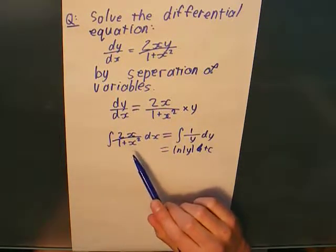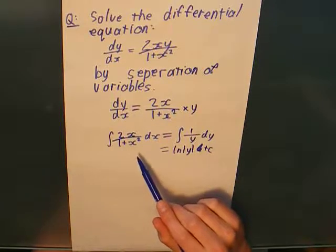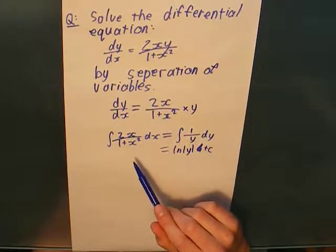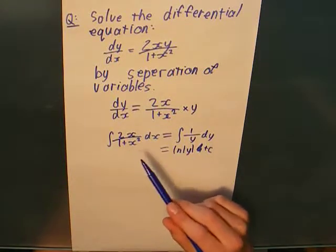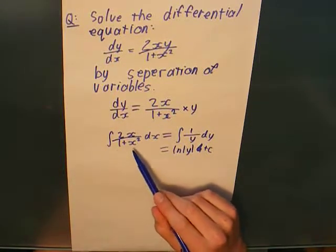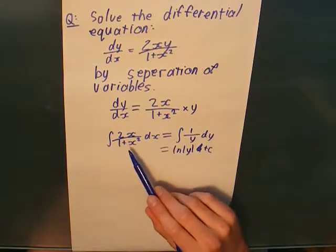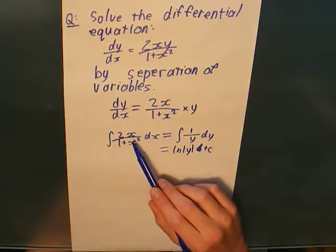So, this, 2x over 1 plus x squared. That almost looks like integration by substitution, doesn't it? We've got 1 plus x squared here, and the derivative of 1 plus x squared is 2x.